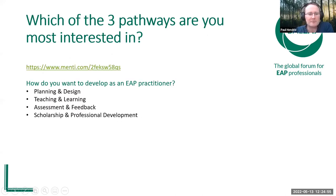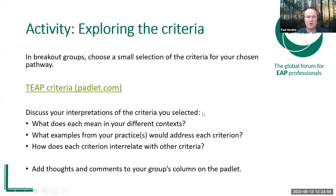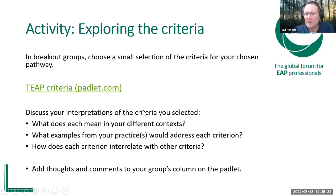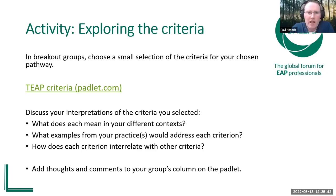We've had a look at the pathways, and now we're going to explore the criteria. We're going to work in breakout groups for 15 minutes. I want you to go into the handbook and choose a small selection of the criteria for your chosen pathway. If you access the handbook on the Padlet — shared in the chat — you'll find the criteria between pages 16 and 22. Page 16 is where the associate fellow criteria starts. Have a look at those criteria and, in your groups, discuss what they mean and your interpretations in your different contexts.